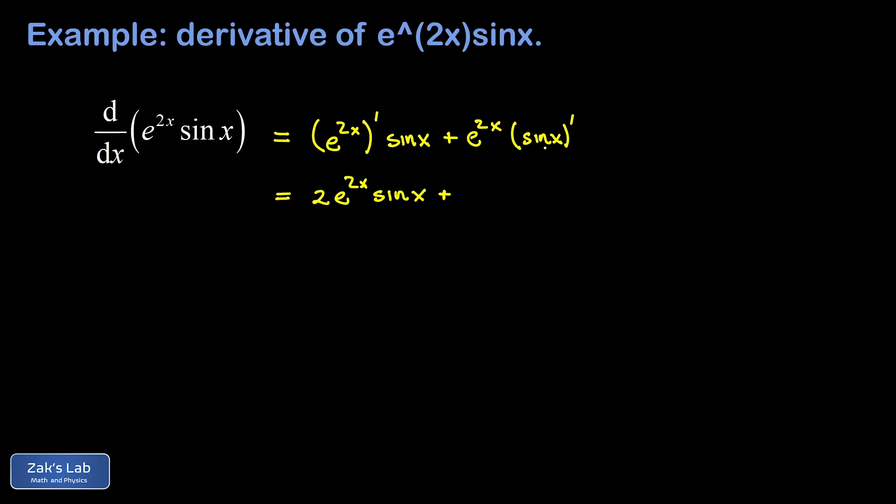Then in our second term, we have to differentiate the sine function, which differentiates to the cosine function. So we have e to the 2x cosine of x.